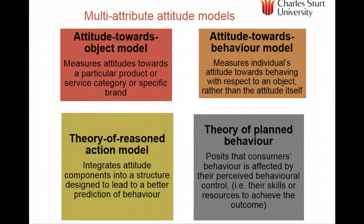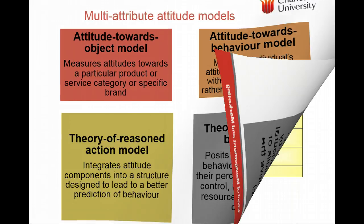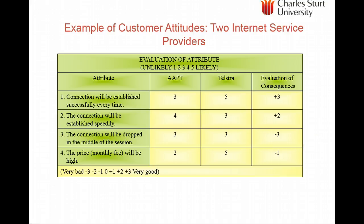There are a number of multi-attribute models because an attitude consists of more than one thing. We call this the attitude towards the object model — a summative score or attitude. Then there's the attitude towards behaviour, which means you can have a positive attitude towards a Ferrari, but what's your attitude to actually selling everything you own and buying one? The theory of reasoned action goes further, talking about other factors influencing actual choices, including perceived control — explained also by the theory of planned behaviour.